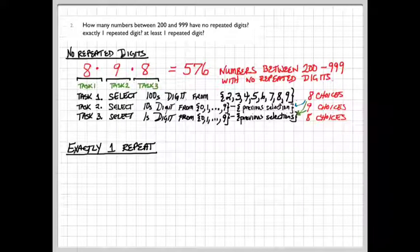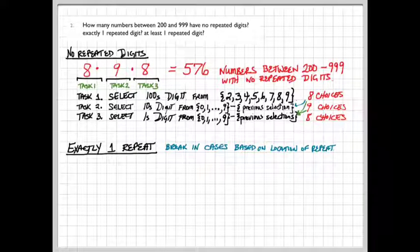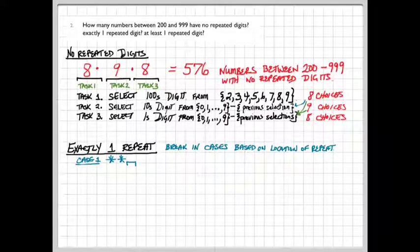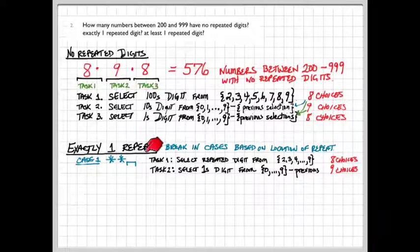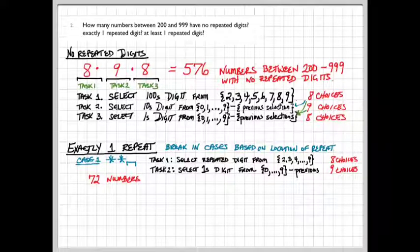Let's consider the case now where we want to have exactly one repeat amongst the digits. We'll break this down into cases based upon where that digit is repeated. In case one, the repeat is going to be in the hundreds and the tens position. We'll break this down into two tasks. First, selecting the repeated digit, which, because it includes the first position, the hundreds position, has to come from two through nine, so there will be eight choices. And then selecting the ones digit, which will come from zero through nine, except for what was previously chosen, so there will now be nine choices. And that gives us 72 numbers where the repeat occurs in the hundreds and the tens position.